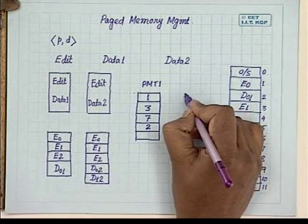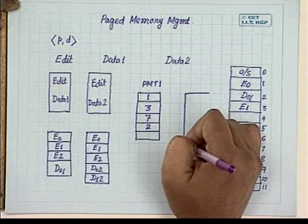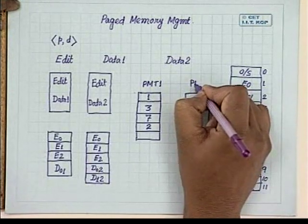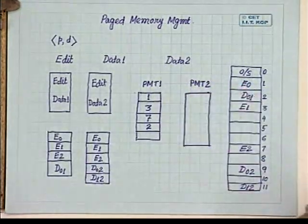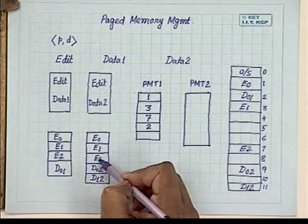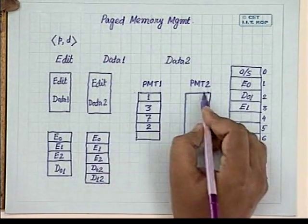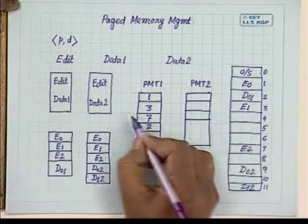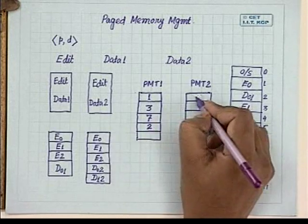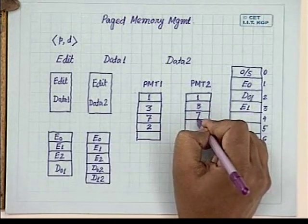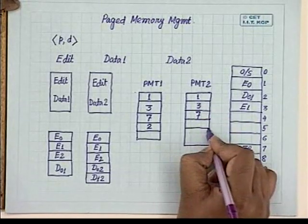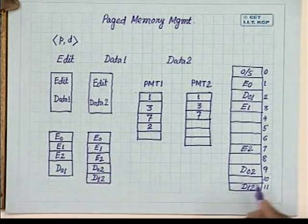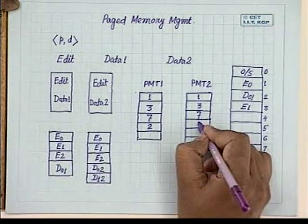Similarly, for PMT2 of user program 2, since the first three pages are shared, the first three entries are the same as PMT1: 1, 3, and 7. The next two entries correspond to data pages of user program 2. D02 is loaded in frame 11, so that entry contains 11.